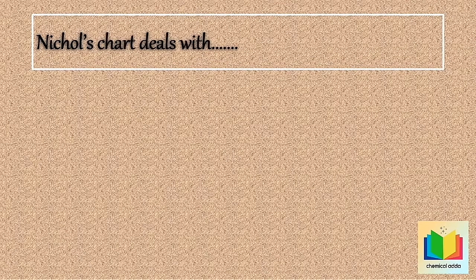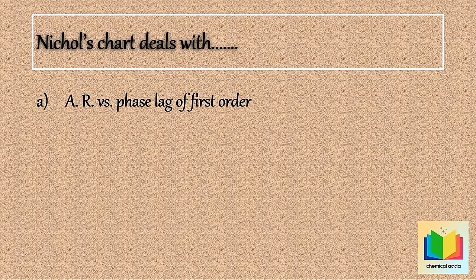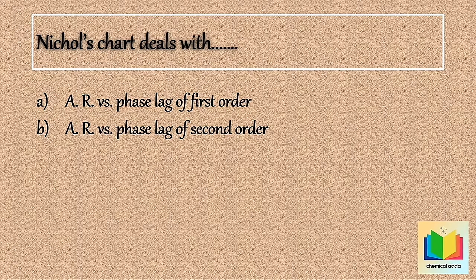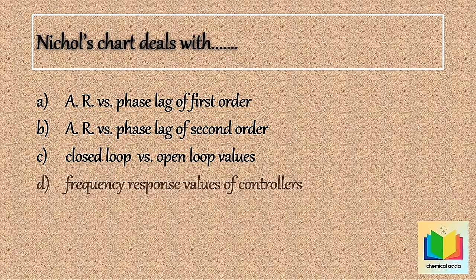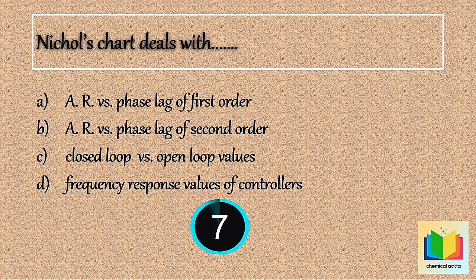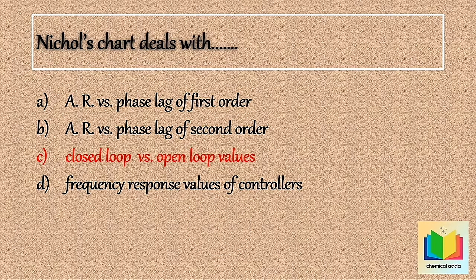Now next question — Nichols charts deals with: Option A) AR versus phase lag of first order system, Option B) AR versus phase lag of second order system, Option C) closed loop values versus open loop values, Option D) frequency response values of controllers. Your time starts now. 10, 9, 8, 7, 6, 5, 4, 3, 2, 1. Stop. Answer is option C: closed loop values versus open loop values.